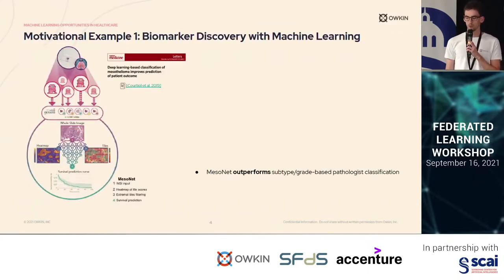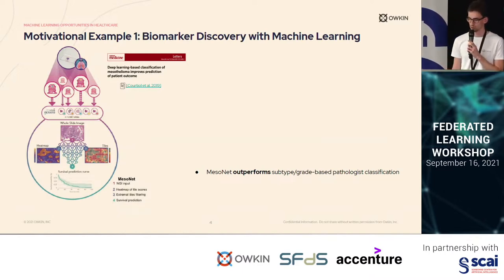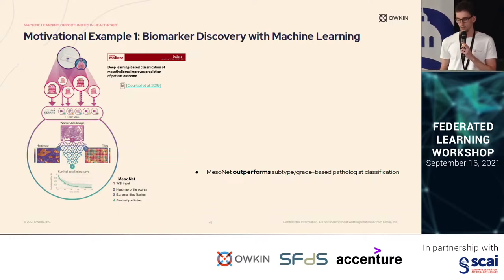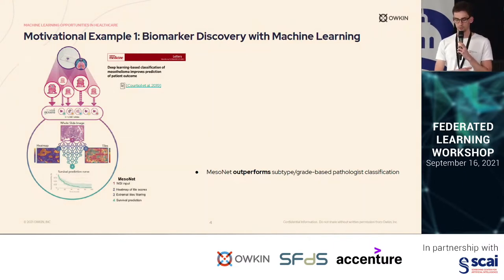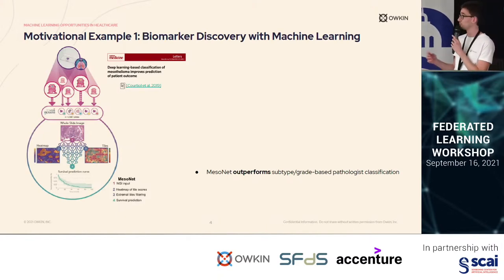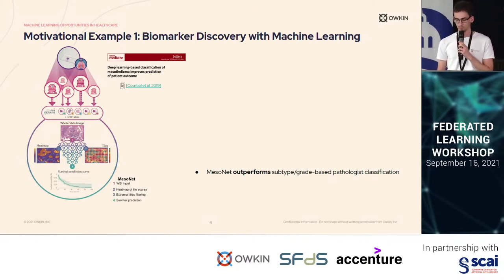The first one is an example of biomarker discovery with machine learning. This is a work done by keen researchers and medical doctors three years ago, on mesothelioma, which is a kind of cancer caused by asbestos. This cancer can be hard to predict its outcome, and so researchers and data scientists trained a machine learning model which predicts the outcome of the disease given an image of the cancer at diagnosis.